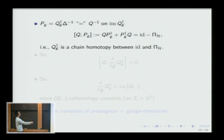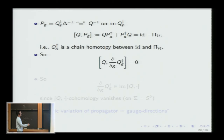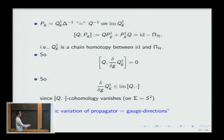Because the propagator satisfies the identity Q·P + P·Q = Id − (projection onto zero modes), this is a chain homotopy between the identity and projection. The zero modes on S² come only from constant functions and volume forms integrating to zero — i.e., the harmonic forms on S² involve only the zeroth and second Betti numbers. When I vary the metric, the propagator changes by something in the image of Q. Metric variations of the propagator are therefore gauge directions, so the right-hand side is metric-independent.